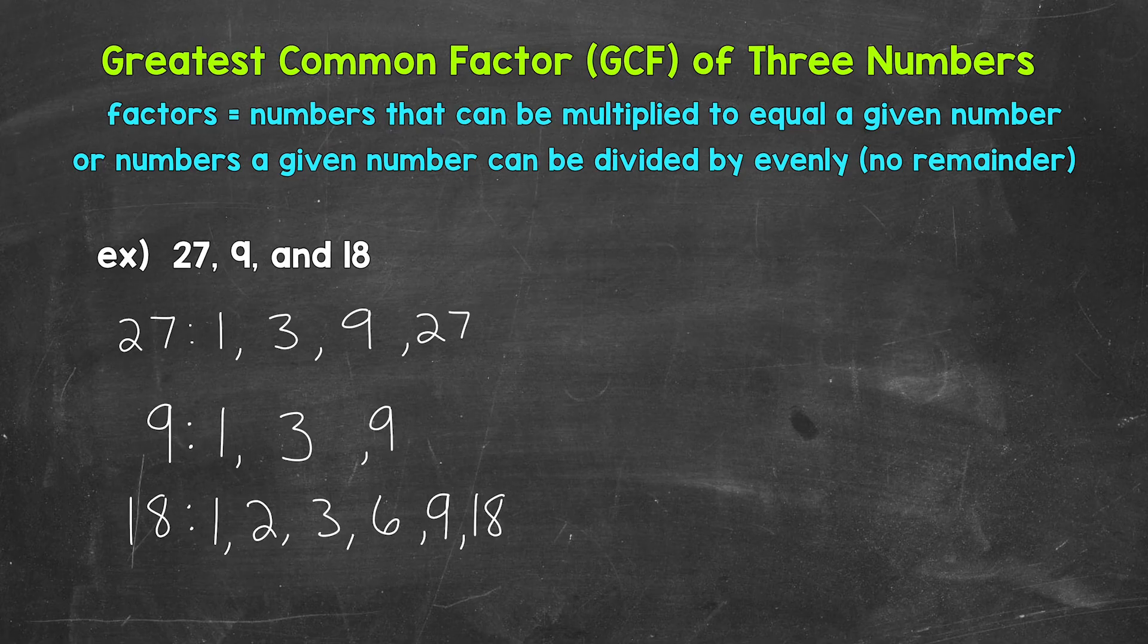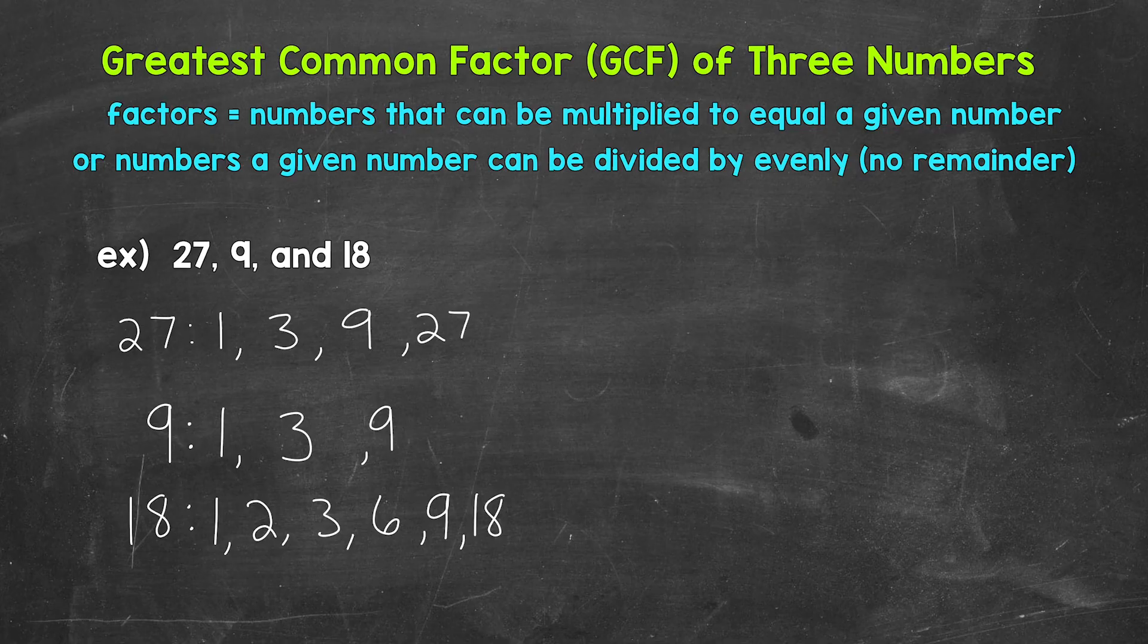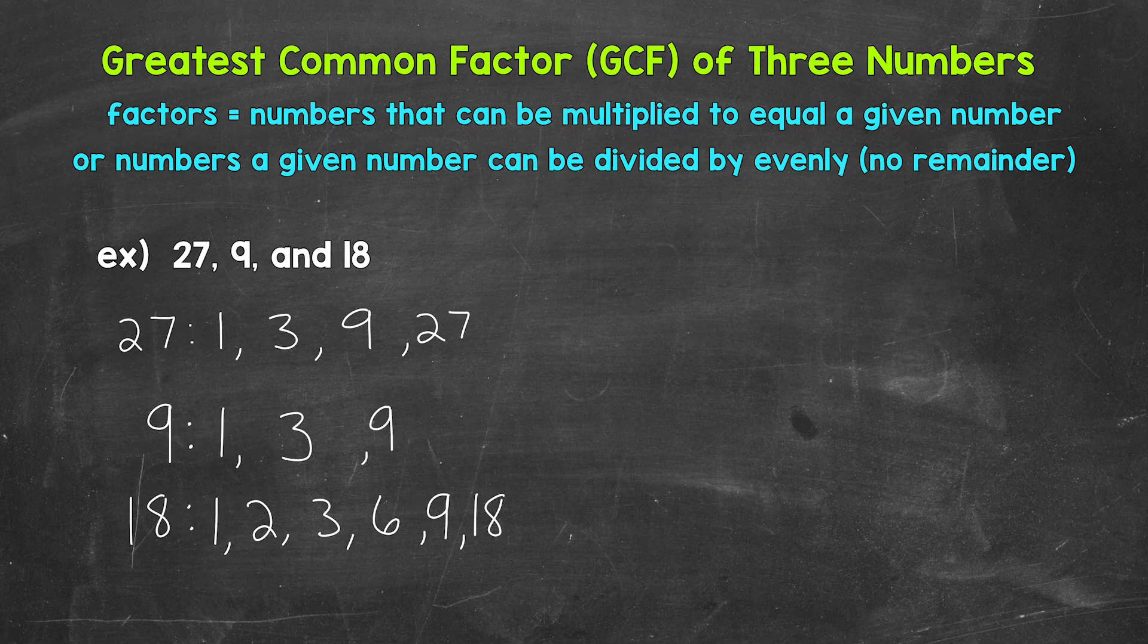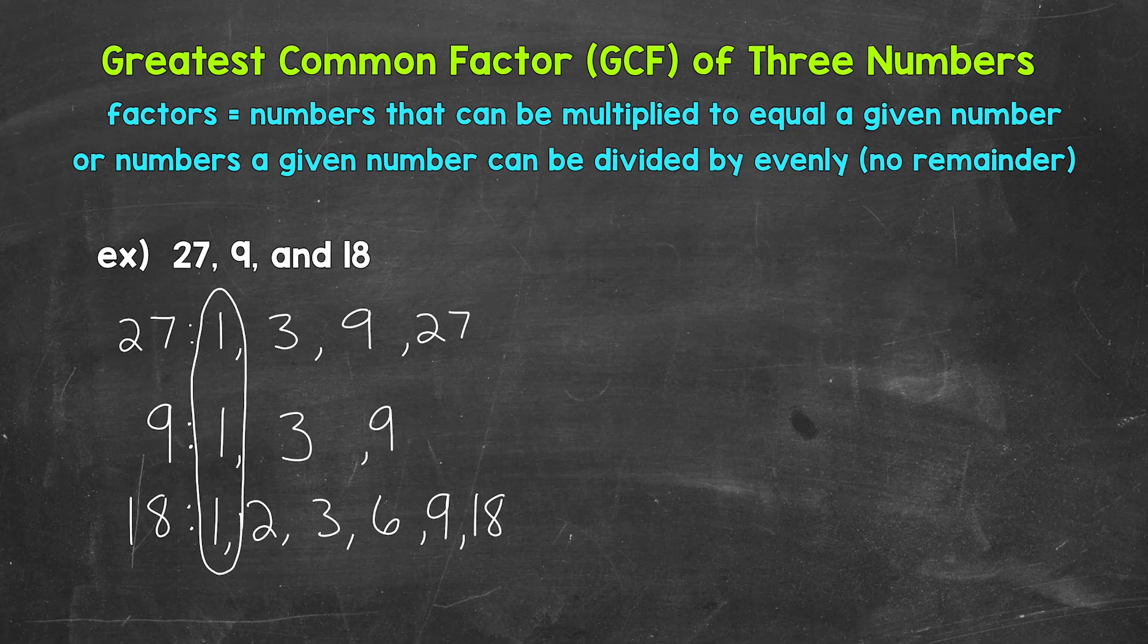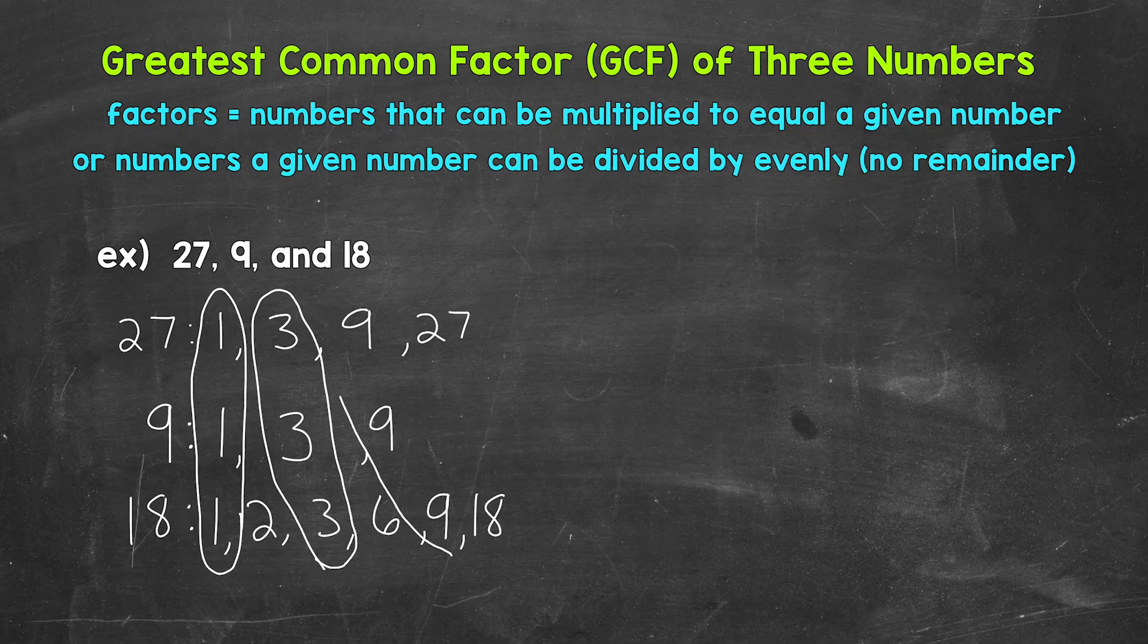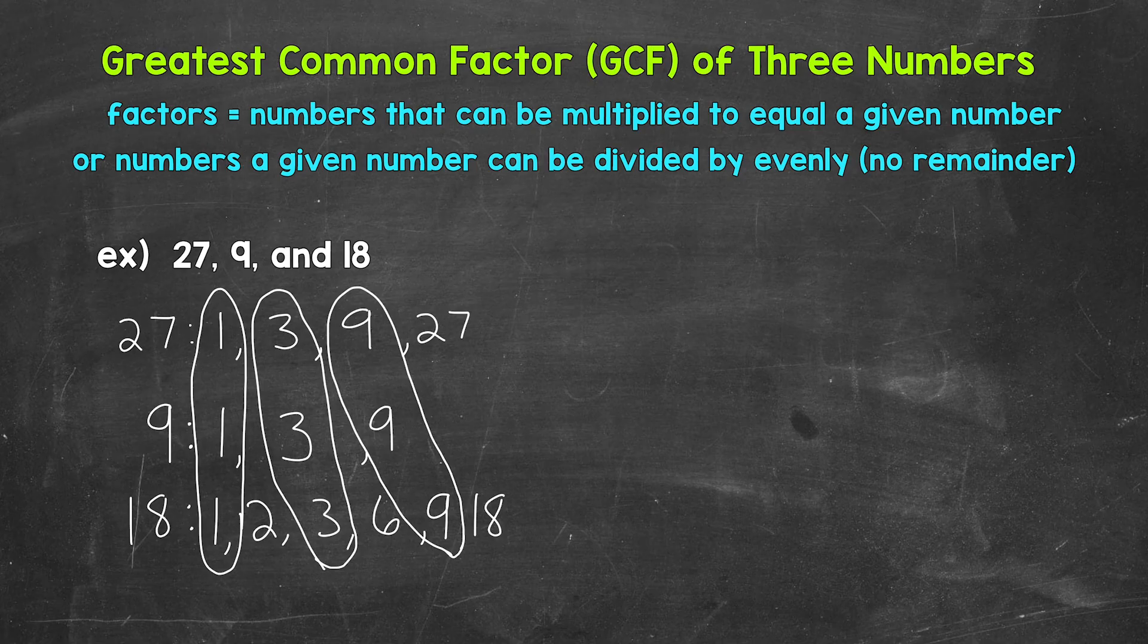So factors they share. And then specifically, we need to look for the greatest common factor. So the greatest factor in value that they all share, that they all have in common. So 1 is going to be a common factor. 3 is going to be a common factor. And then 9 is going to be a common factor. So there are three common factors between these numbers.